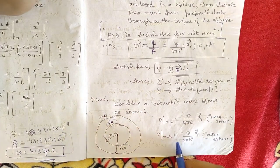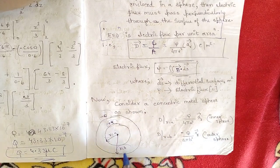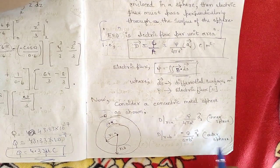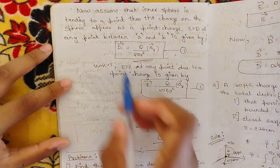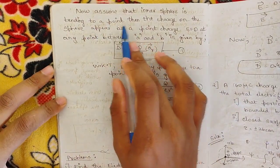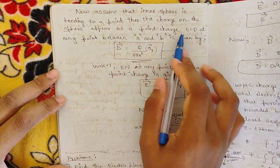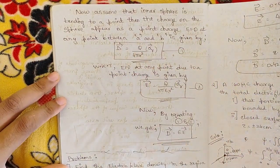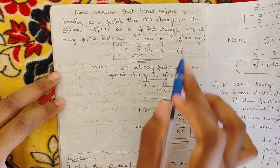The flux density at radius b for the outer sphere is minus Q divided by 4 pi b squared times the unit vector a_r. Now assume the inner sphere tends to a point — then the charge appears as a point charge, and the electric flux density at any point between a and b is given by D equals Q divided by 4 pi r squared times a_r. Call this equation 1.